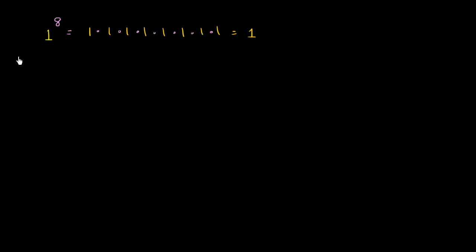You might ask, what about 1 to the 0 power? We've already said anything to the 0 power — except for 0, which is actually up for debate — is going to be equal to 1. As a little bit of intuition, you could view this as starting with a 1, and this number says how many times you multiply that 1 by this number. So 1 times 1, zero times, is just going to be 1.